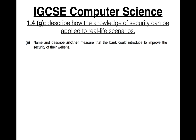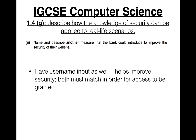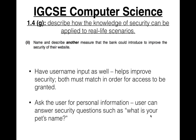Question two: name and describe another method the bank could introduce to improve the security of their website. We could say: have a username input as well to improve security, so both username and code must match for access to be granted. We could also include personal information questions — for example, 'What is your pet's name?' — or other measures like firewalls or some kind of security protocol. Mark schemes tend to be quite open to these types of questions.